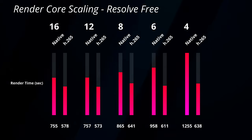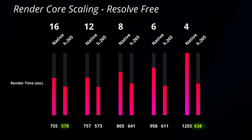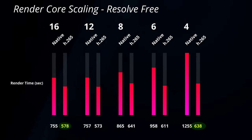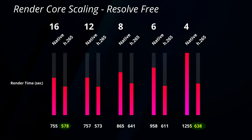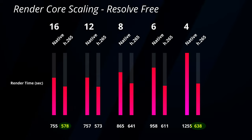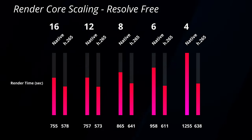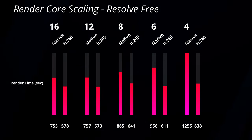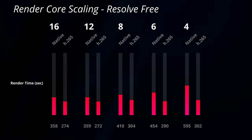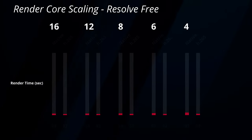Even at four cores it only took 10 minutes and 38 seconds, while at 16 cores it took nine minutes and 38 seconds. Because of this, and because H.265 renders at better quality than H.264 for a smaller footprint, I consider render a wash. What really matters when talking about the number of cores in the free edition of Resolve is timeline playback.